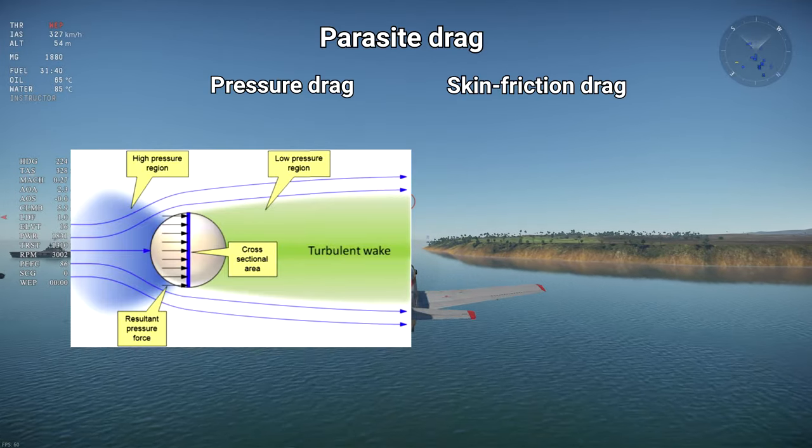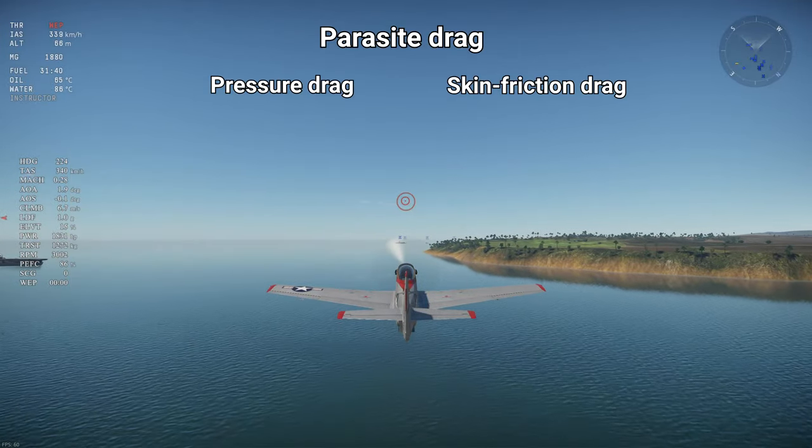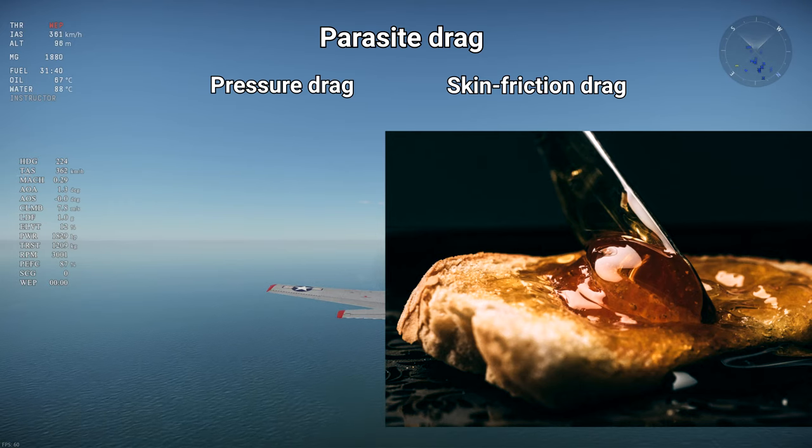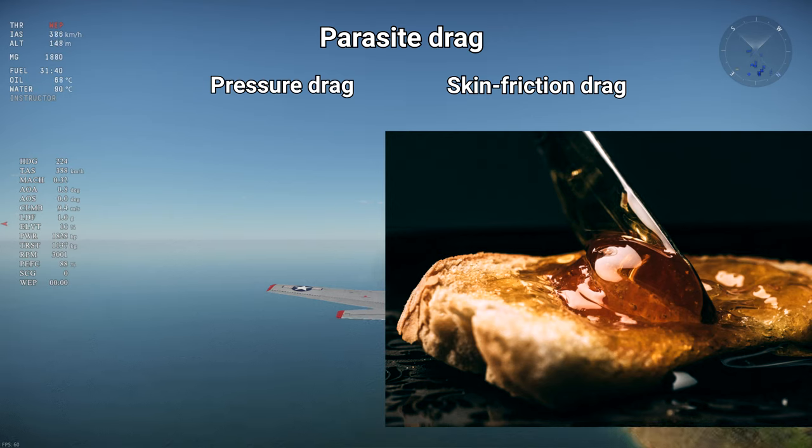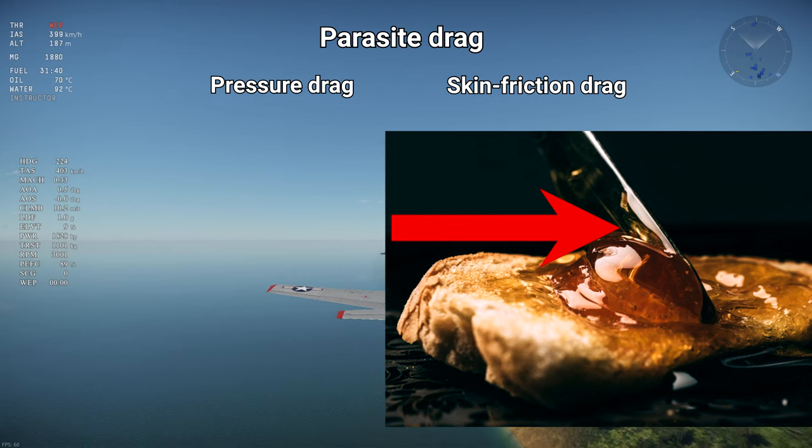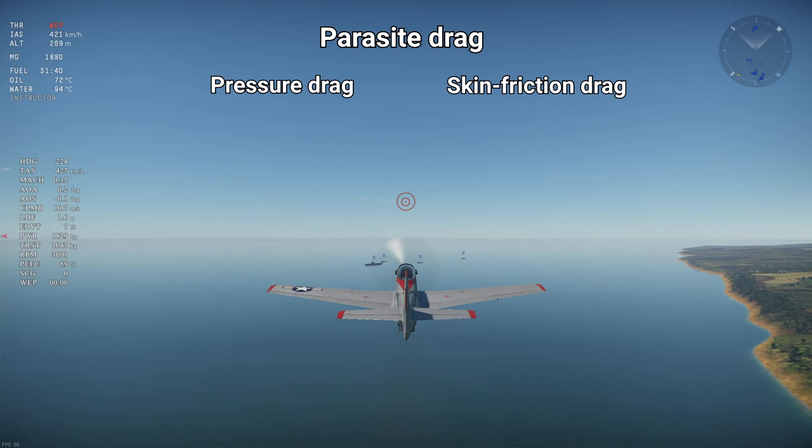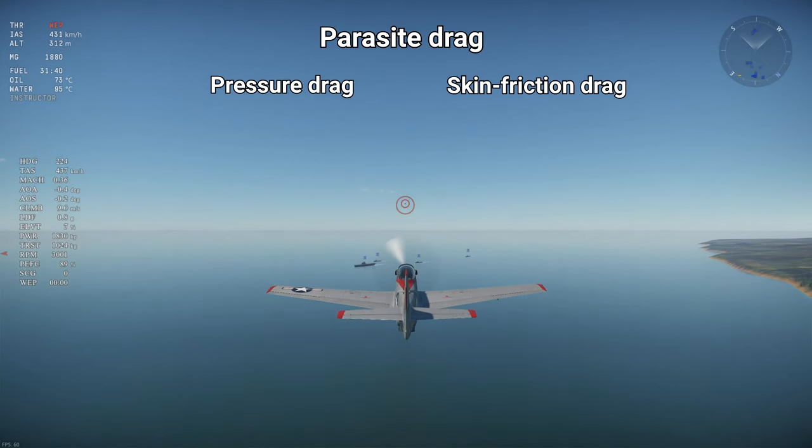Skin friction drag is a bit more difficult to visualize. Imagine you're spreading honey on bread. You'll need to exert force on the knife to adequately spread the honey, and that's because the honey's high viscosity makes its molecules stick to the knife. As they slide across the knife and onto the bread, it exerts force on the knife, slowing it down and forcing you to exert an equal force to keep going. The same thing happens in the air, except that the air's viscosity is much lower than honey's, so it's not often noticeable to humans.